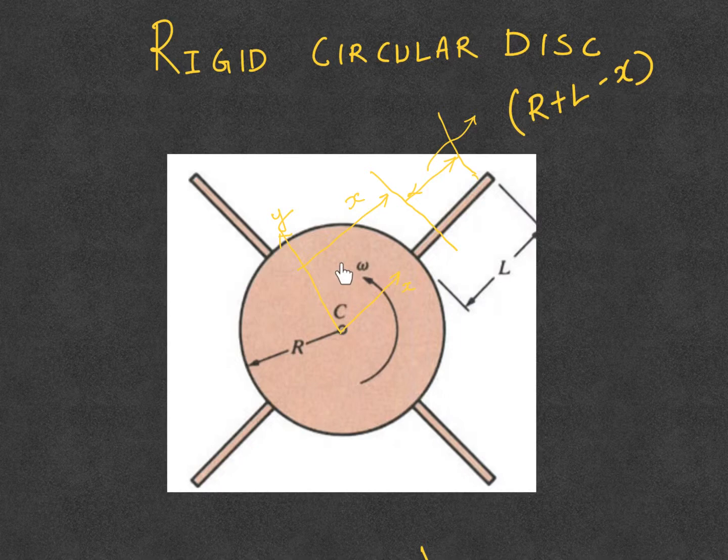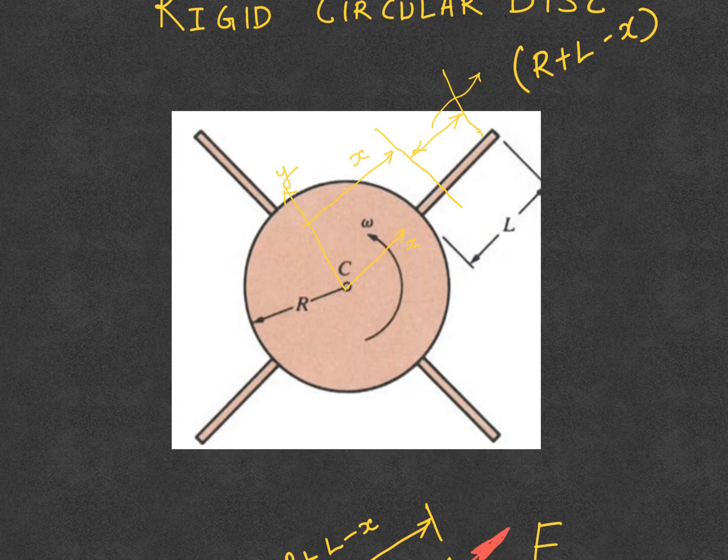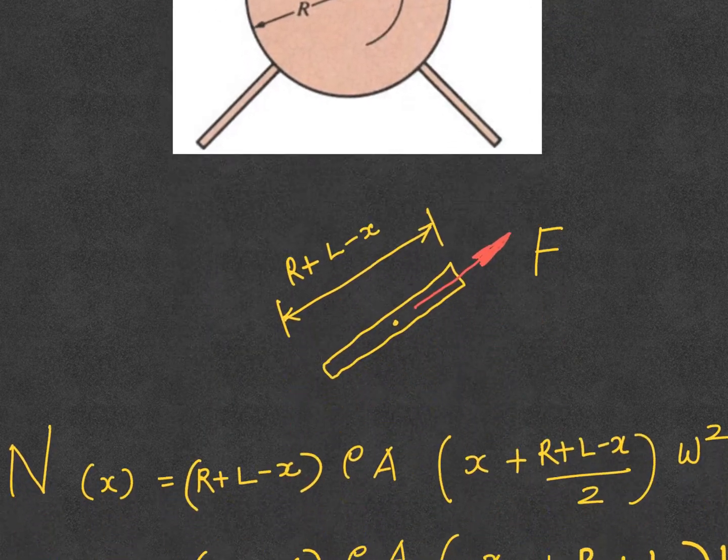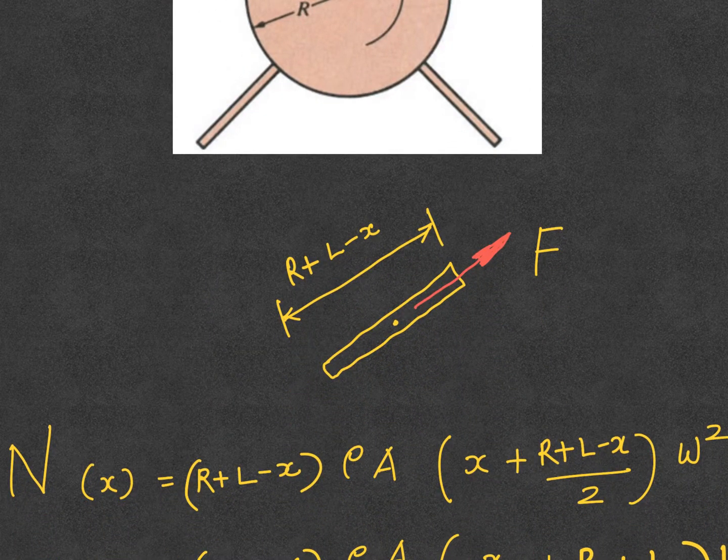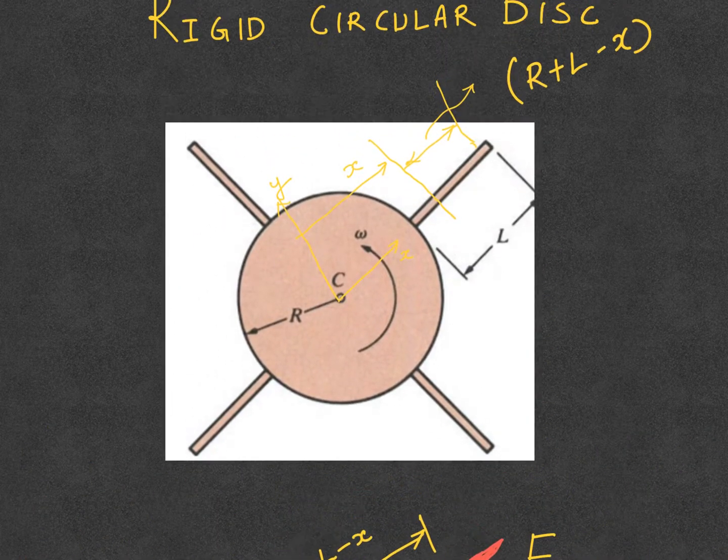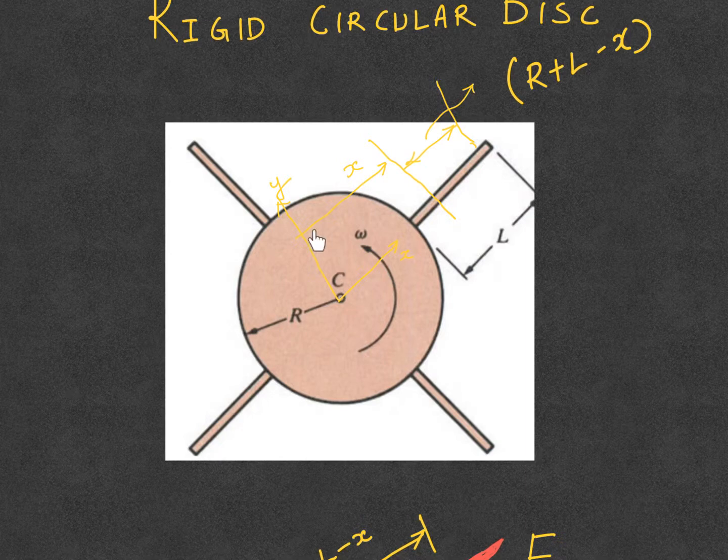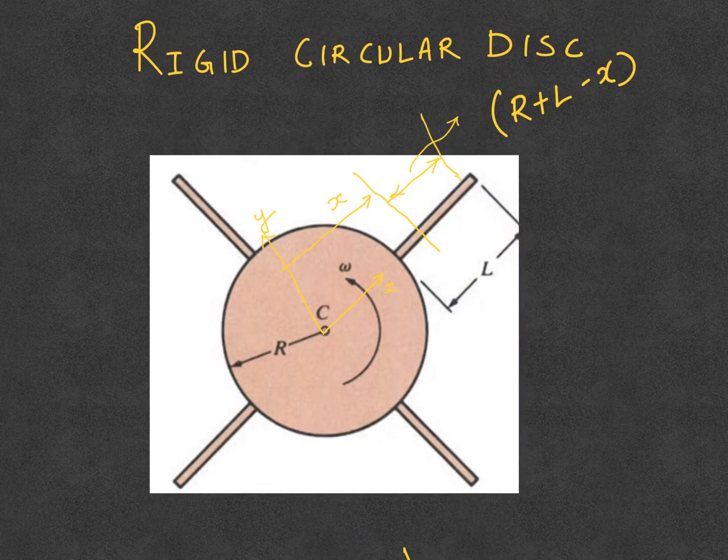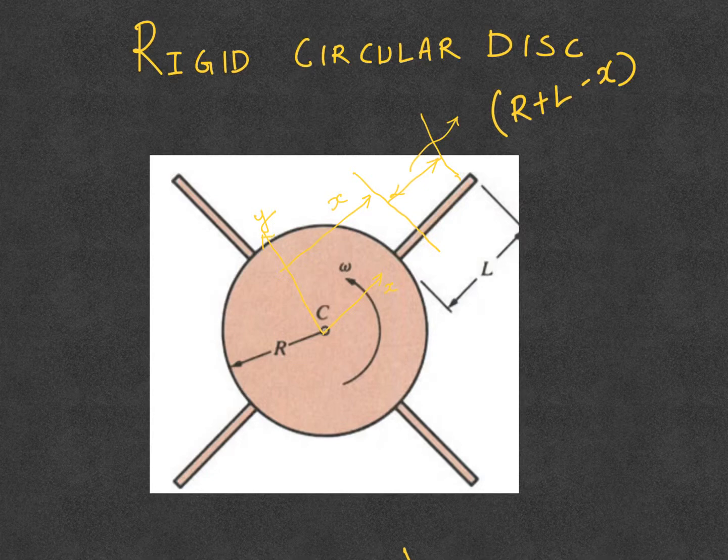At an arbitrary location x from the origin, I am taking a section at this location. When I take the section at a distance of x, I am left with another segment which will be of length R+L-x, because this total length is capital R plus L.